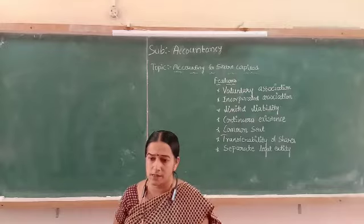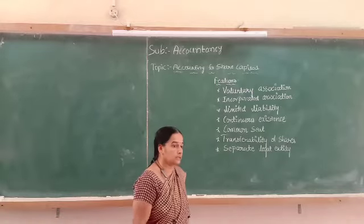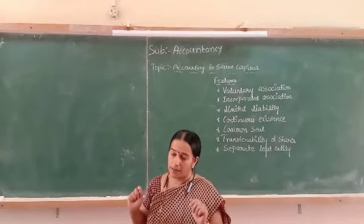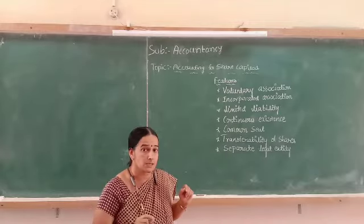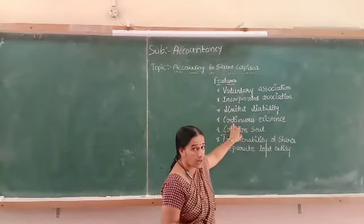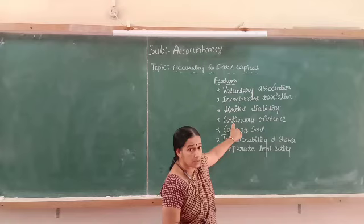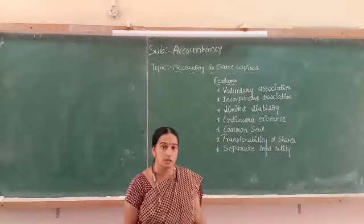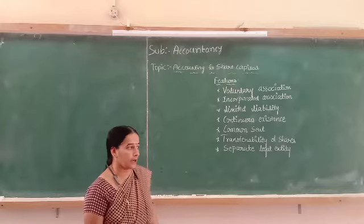Continuous existence means the company is not affected by the death or retirement of a partner. In the case of a joint stock company, it came into existence on a continuous basis — that means for a longer period of time. Any person may retire from the business, or any shareholder, if he dies, it will not affect the business and the business will be carried on for a longer period of time.